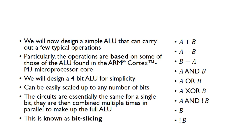We will now design a simple ALU that can carry out a few typical operations. The operations that this ALU is based upon can be found in the ARM Cortex M3 microprocessor core. We are going to design a 4-bit ALU for simplicity, but it can easily be scaled up to any number of bits, because each of the circuits are essentially the same for a single bit. This idea is known as bit slicing — we design the circuit for one bit and then just put multiple instances of the circuits in parallel.